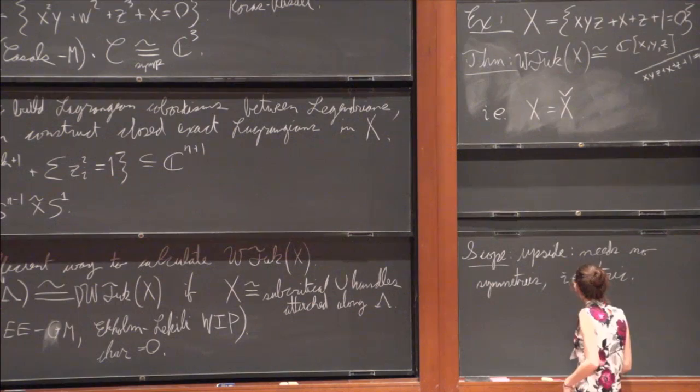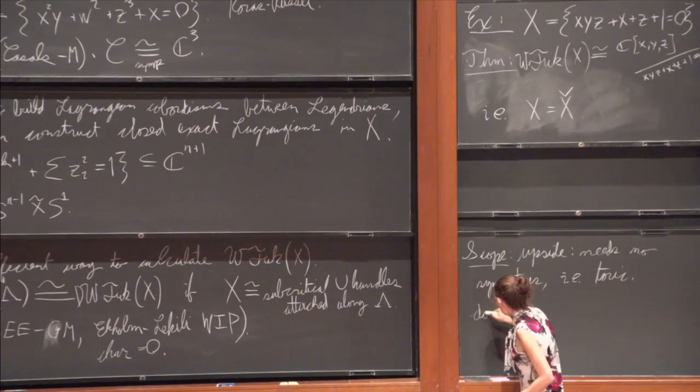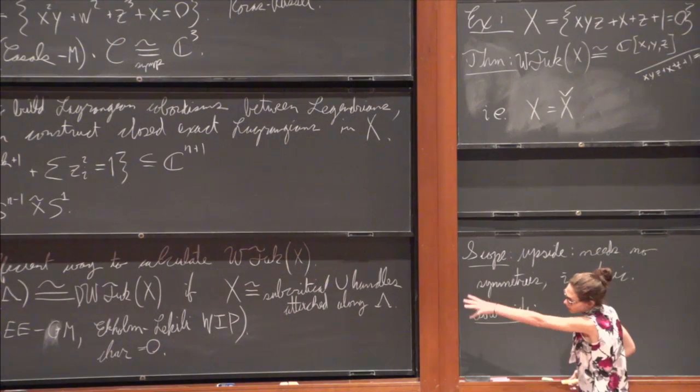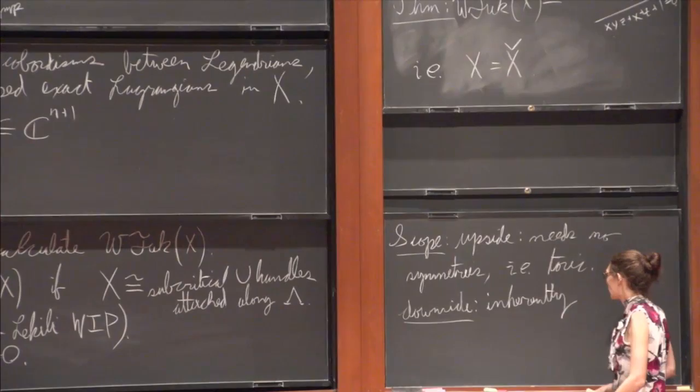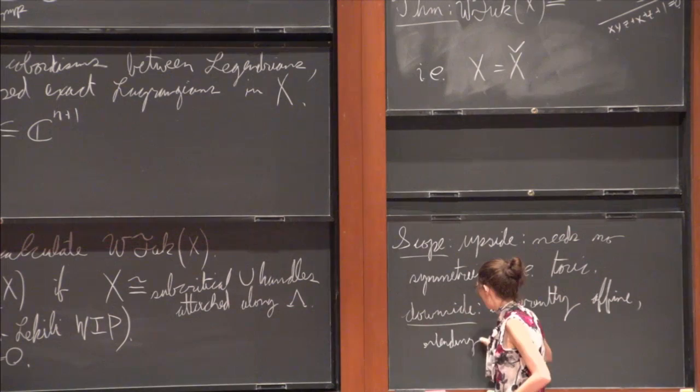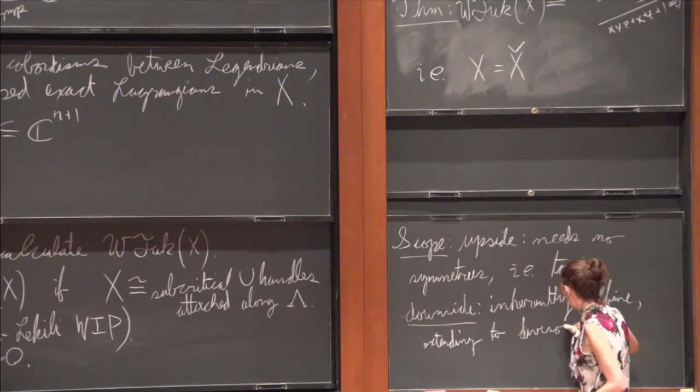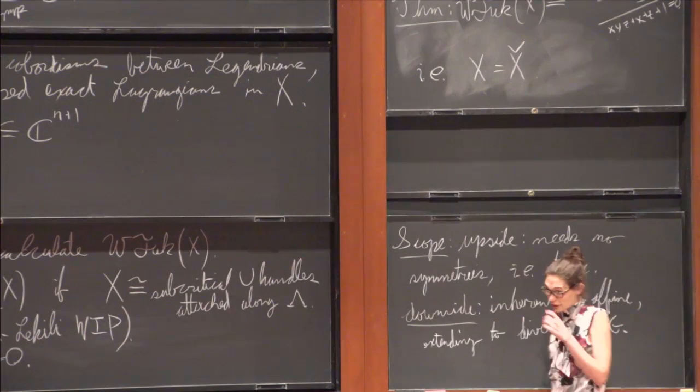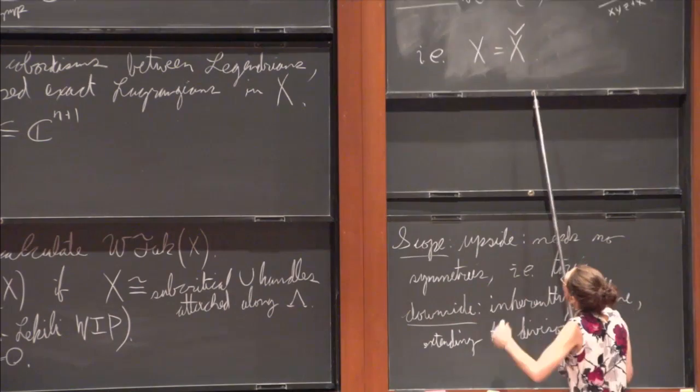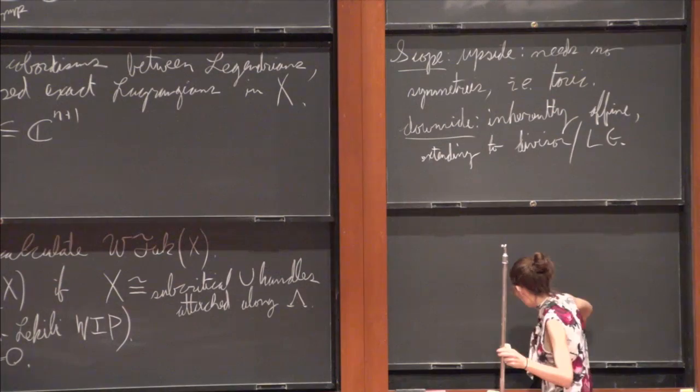And so this kind of extends to many examples that I think were a bit harder to get to. The sort of downside though is that this picture of Weinstein and kind of contact geometry is inherently affine. So if I want to extend these sort of results to the divisor or the Landau-Ginsburg potential, that's probably not something that this can do, at least not with some major new ideas I guess.